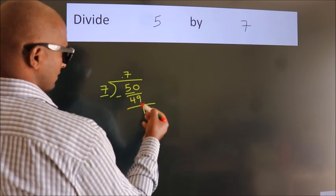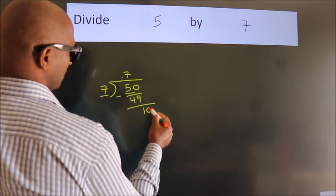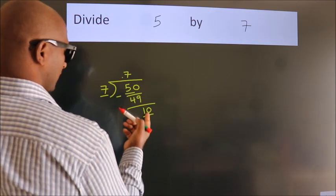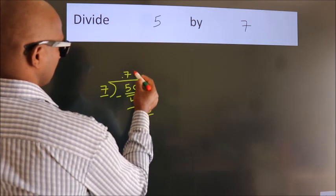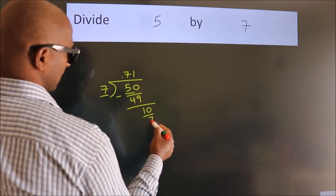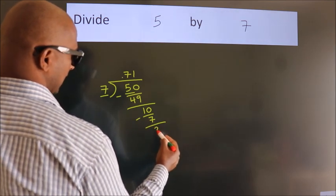After this, we already have the decimal, so directly take 0. So 10. A number close to 10 in the 7 table is 7 times 1 equals 7. Now we subtract and get 3.